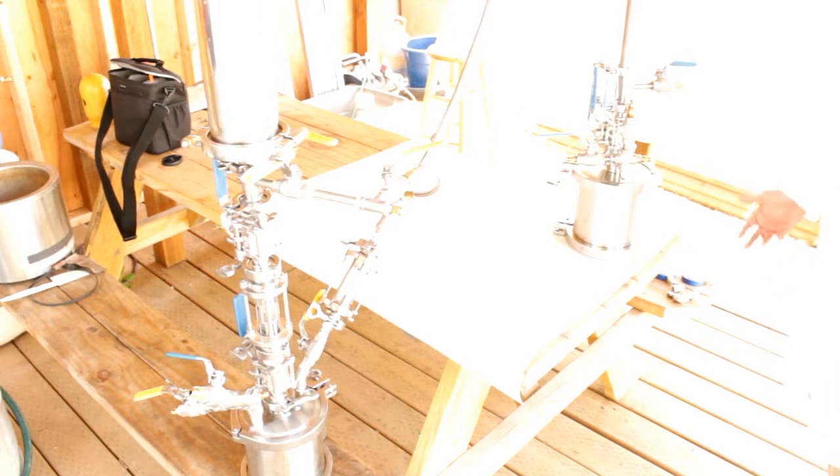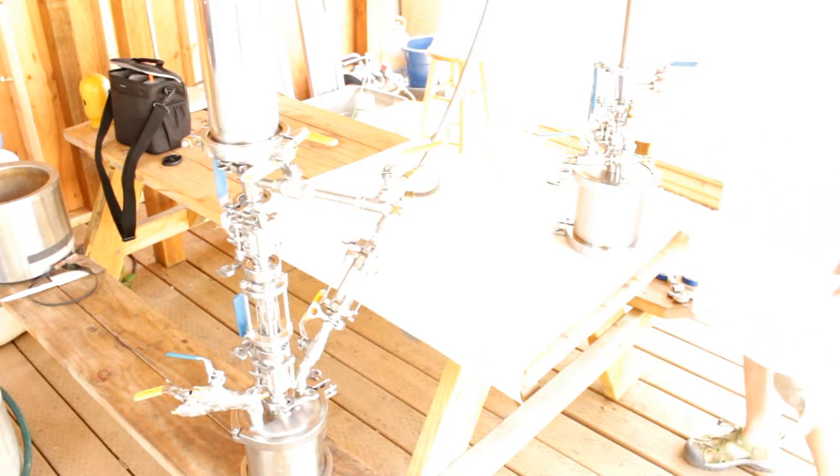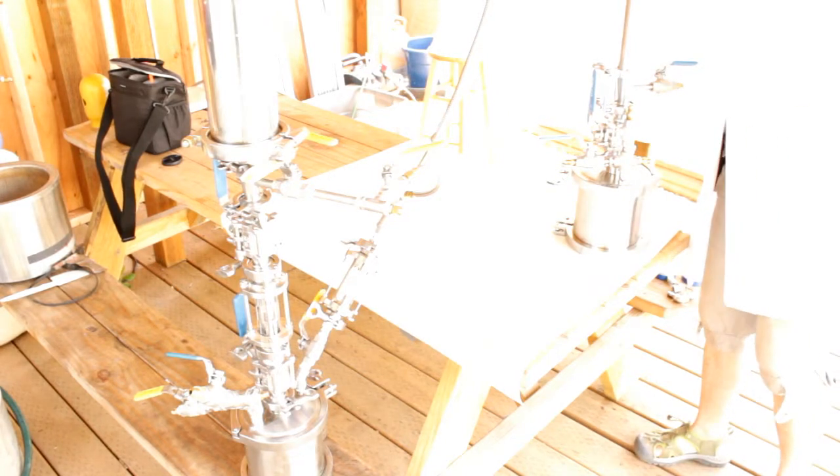So the question is, how do you get from here to here? And it's really a pretty simple process of just adapting some pieces here and there to accommodate what you need. So we're going to start by removing this overflow tube.